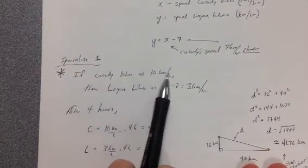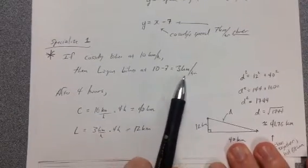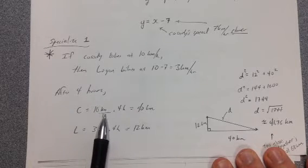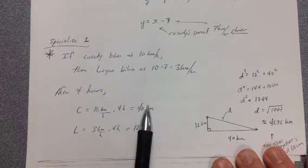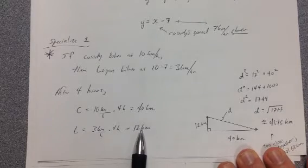Let's let Cassidy bike at 10 kilometers per hour. Then Logan bikes 3 kilometers per hour. That's a pretty slow bike. After 4 hours then, we've got 10 kilometers per hour times 4 hours, that's 40 kilometers. We've got 3 kilometers per hour times 4 hours, that's 12 kilometers.